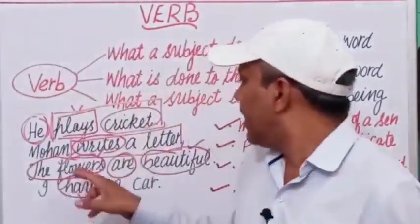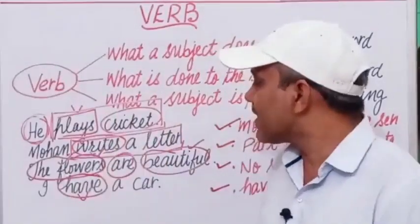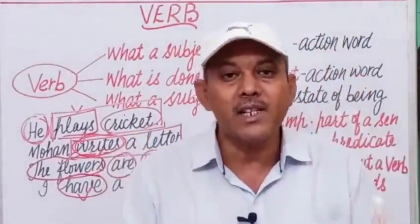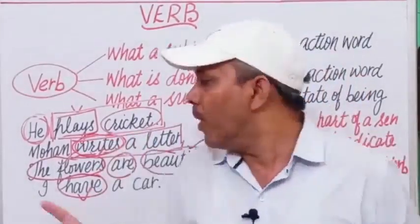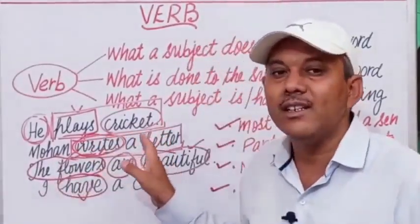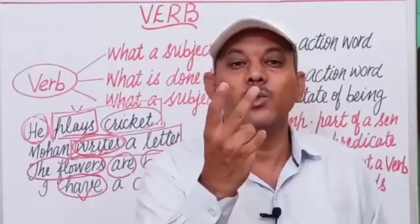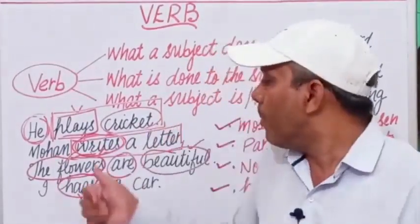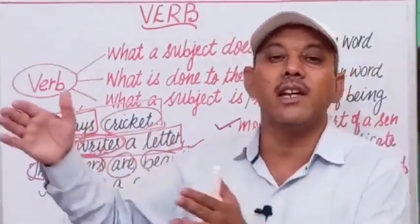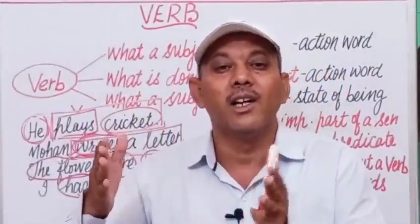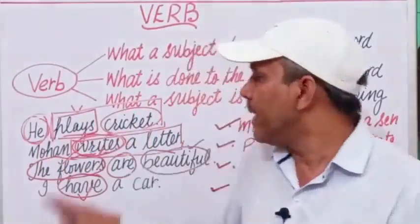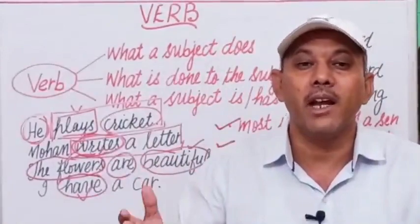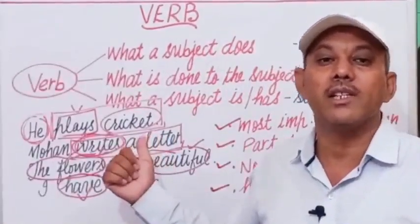Fourth, a verb may have one or more than one word. For example, 'Mohan writes a letter' — single word verb: writes. In the present continuous tense: 'Mohan is writing a letter' — two words: is writing. And 'Mohan has been writing a letter' — three words: has been writing. It may have one or more words depending upon the tense of the sentence.